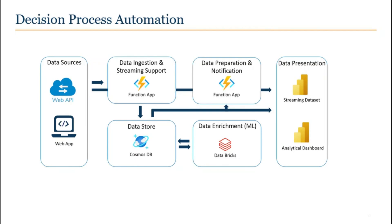This is a decision process automation solution for a customer. There are web APIs and web apps as data sources. Data from the web APIs enters as JSON files and is ingested using function apps into Cosmos DB. There are also function apps that consume data from web APIs and send it to a Power BI streaming dataset, which businesses use as a live dashboard. These functions run every 15 minutes. Website scraping extracts data from internal and external websites, stores it in Cosmos DB, and also sends it to the streaming dataset.